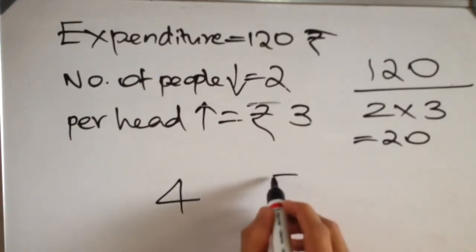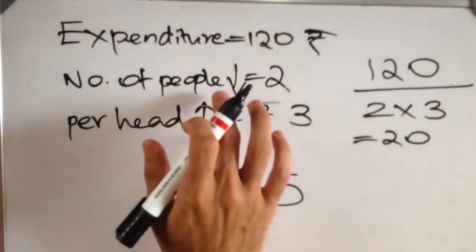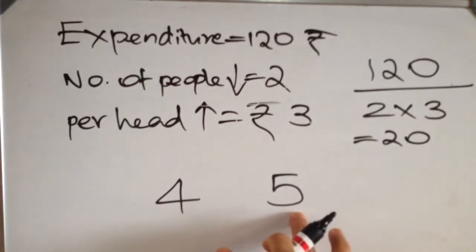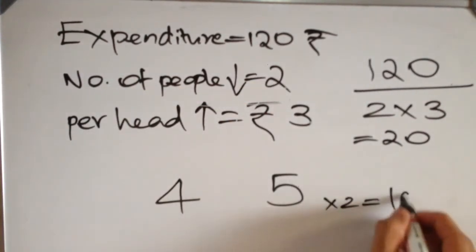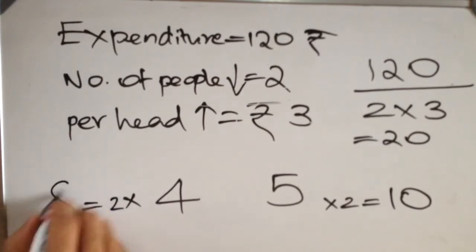Now the number of people planned to go on the trip was greater. So we have the greater value of 5, and 5 into 2 equals 10. So 10 people had planned to go on the trip, but actually only 8 of them turned up for the tour.